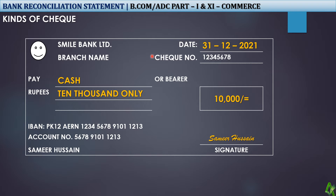This check in its current shape is called a bearer check. Now what is a bearer check? Bearer check means that suppose I have given you this check for 10,000 rupees.